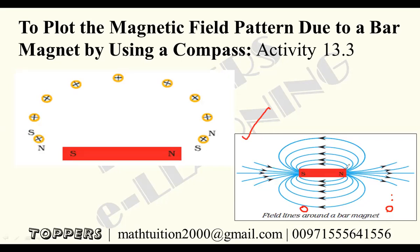Once you complete it, you will get the pattern. The magnetic field lines start from the north pole and end at the south pole. If you start from this end, they come this way and end at the south pole. This is the method of plotting magnetic field lines.